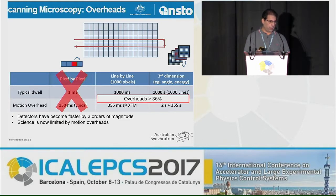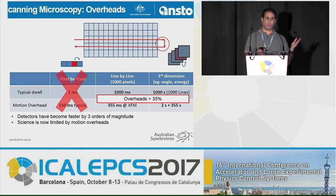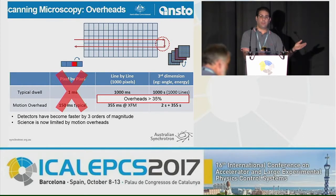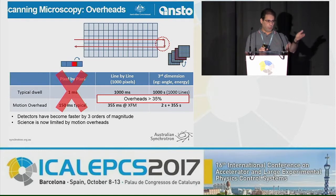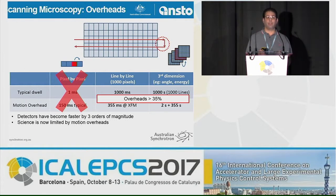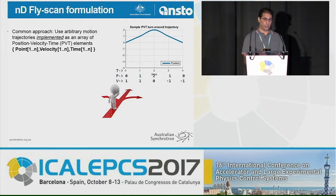We still have something in the order of 30-35% overhead for a typical case. This overhead mostly happens where the sample stage needs to stop after one fly scan, position itself for the next line, and start the next fly scan. This overhead carries over into all higher dimension techniques like XANES and tomography, which scan angle and energy for every complete image, and they all inherit this overhead of typically 30-35%.